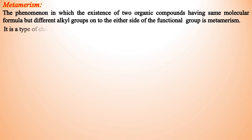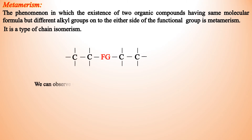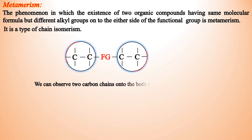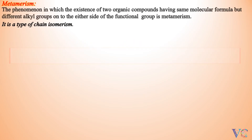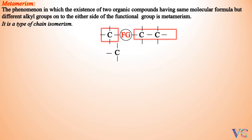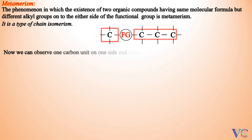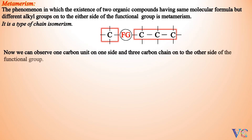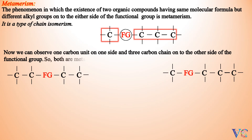It is a type of chain isomerism. We can observe two carbon chains on both sides of the functional group. We can also observe one carbon unit on one side and a three-carbon chain on the other side of the functional group. So both are metamers.